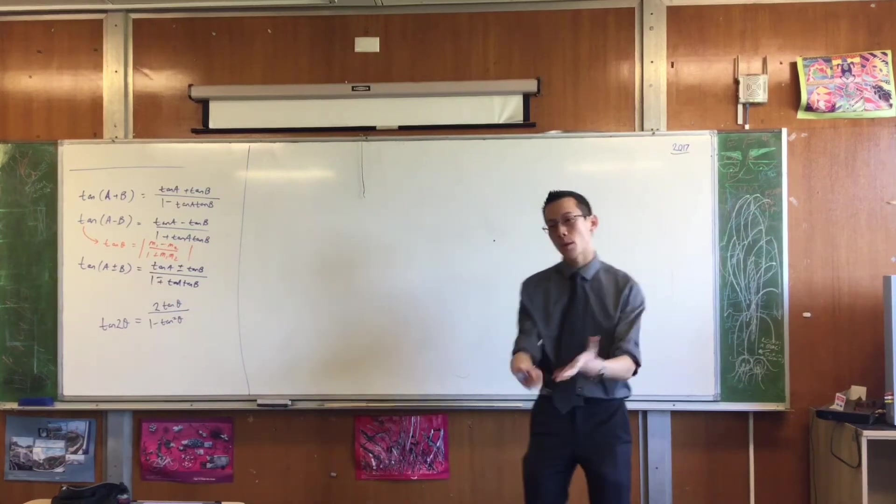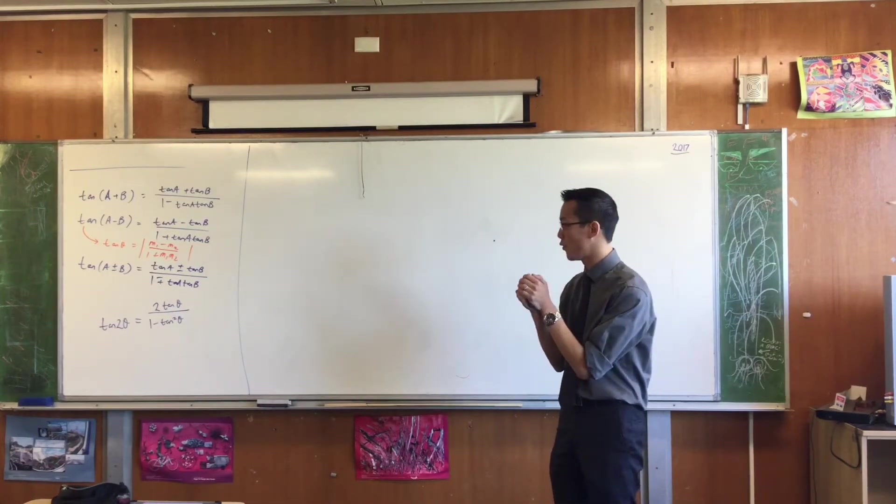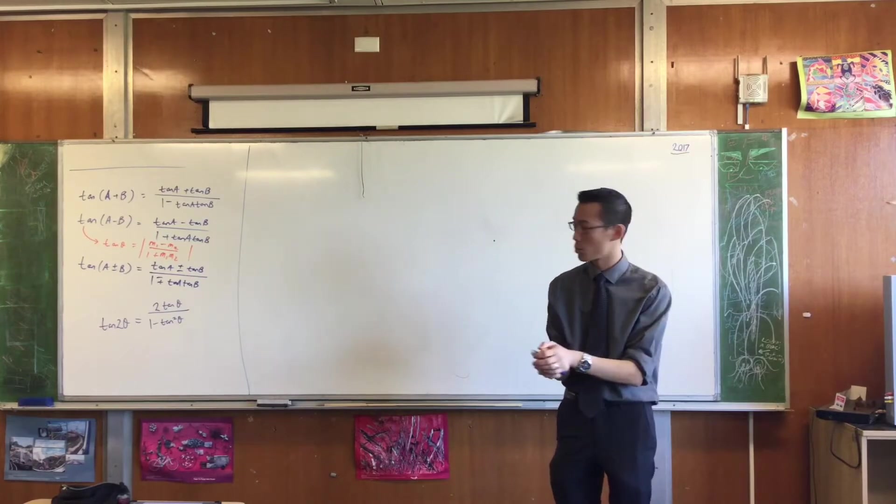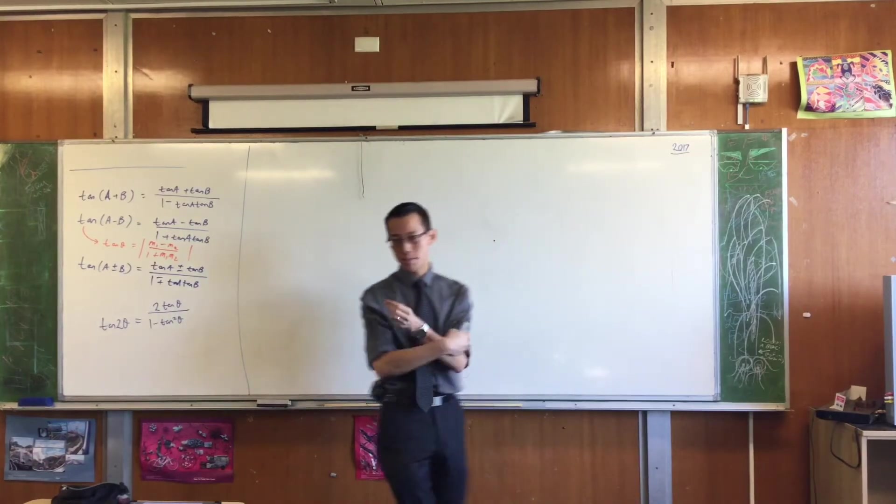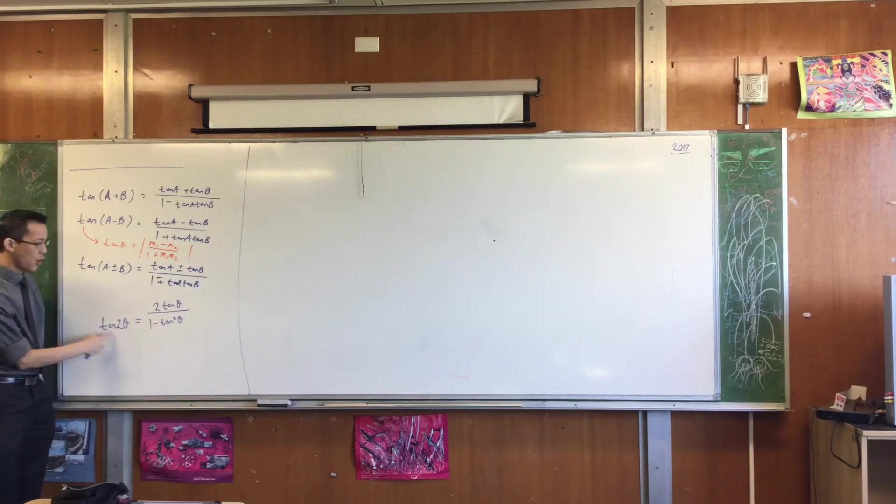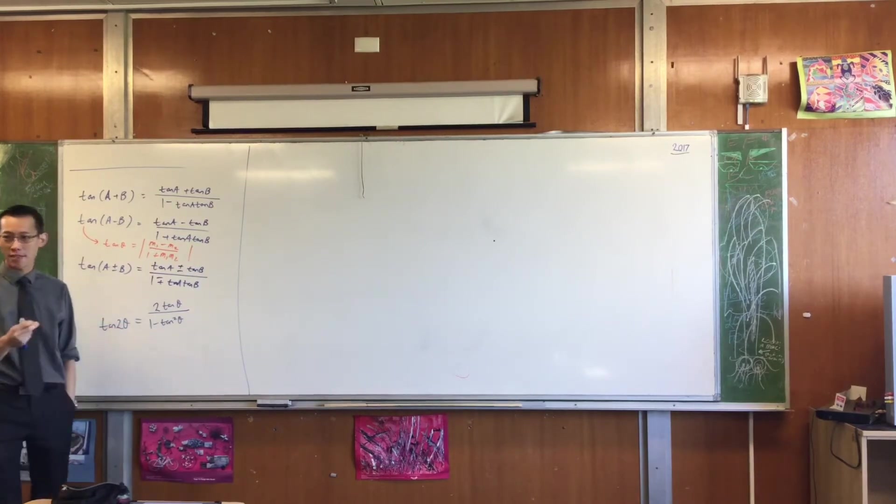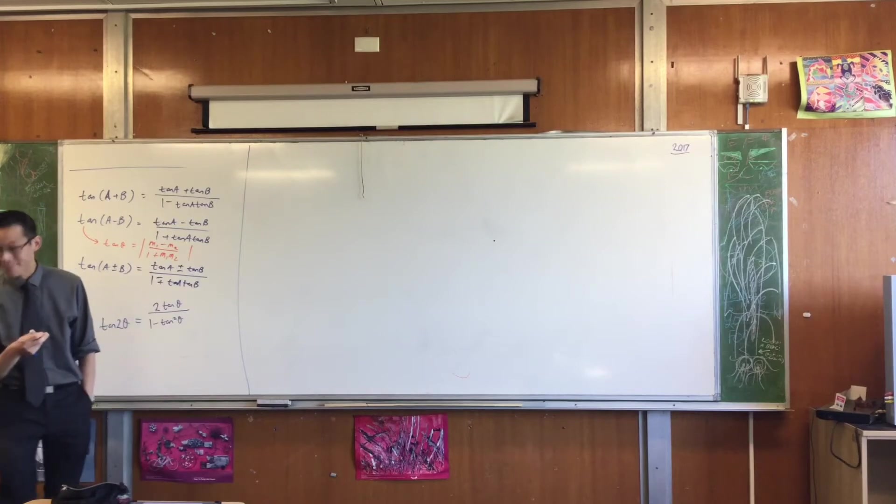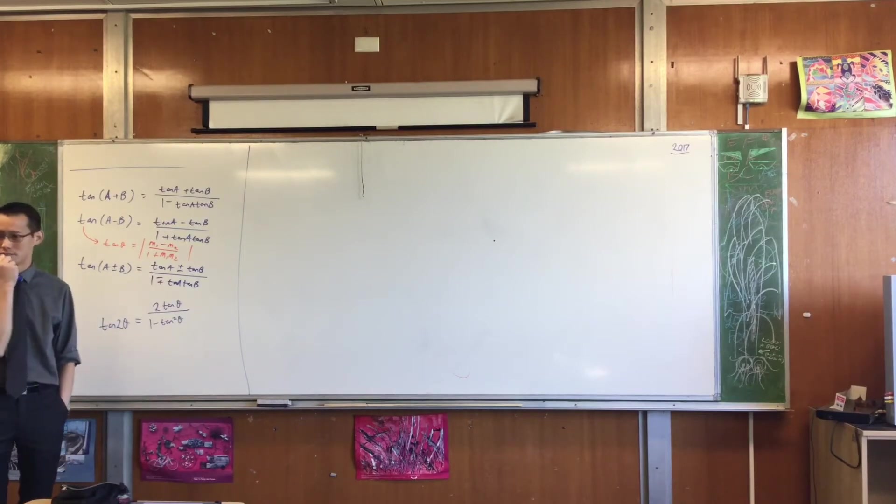This is a double angle identity. We have double angle identities for sine and cos as well. What I want you to notice about this is that if you have a double angle identity, you can just as easily rewrite this as a half angle identity.